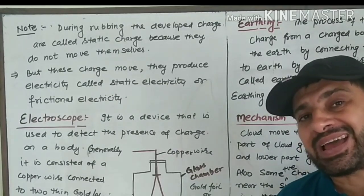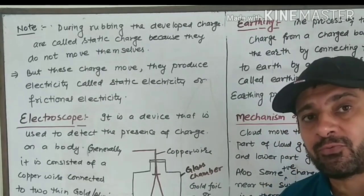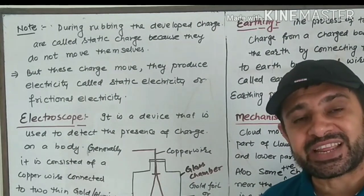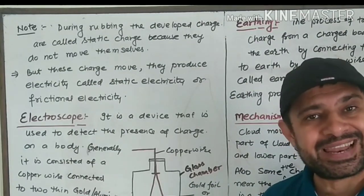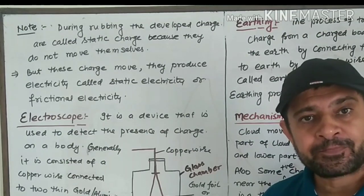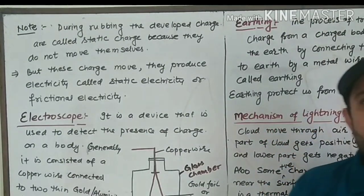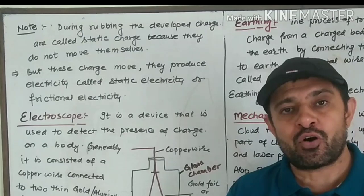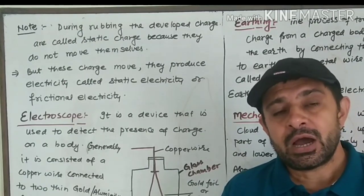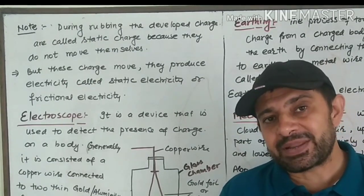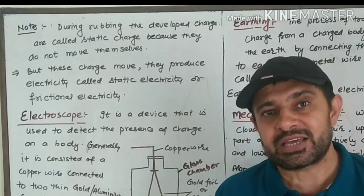But when the charges are forced enough to move, they produce electricity called static electricity or frictional electricity. This is what you have observed when you come home after traveling a lot — you touch the metal door handle and you can feel an electric shock.